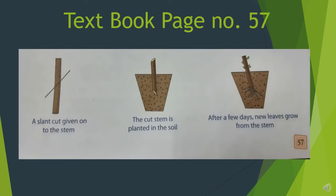Students, please turn to your book page number 57 — you will find the diagram there. Diagram 1 shows a slant cut given onto the stem. Diagram 2 shows the cut stem planted in the soil. Diagram 3 shows that after a few days, new leaves grow from the stem.